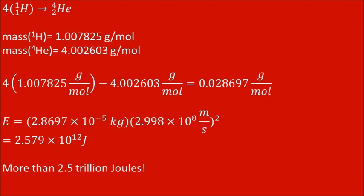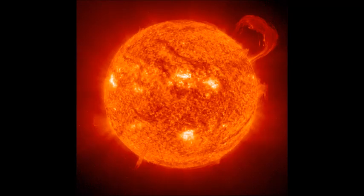That's more than 2.5 trillion joules of energy, enough to power 64 average American homes for a year. From about four grams of hydrogen. Now the Sun doesn't just fuse four grams of hydrogen. It fuses 600 million tons of it. Every second. That's a lot of energy.